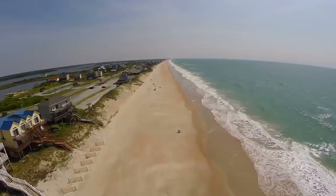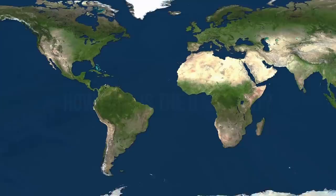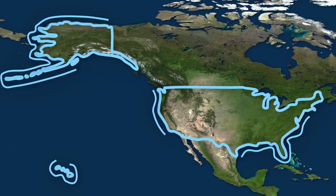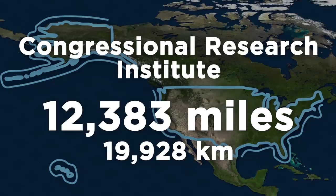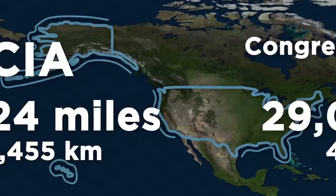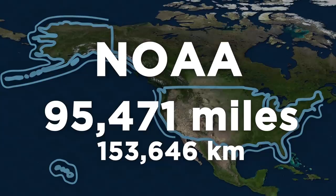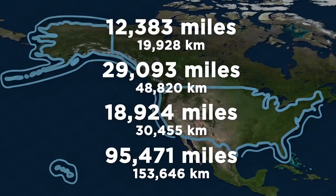So here's the problem this video is going to be talking about: how long is the coast of the United States? If you look at any map and see America, you might think it's easy — just measure the outline of the country and you have your answer. Several people and organizations have already tried this, like the Congressional Research Institute that calculated it to be 12,383 miles, a second study from them that changed it to 29,093 miles, the CIA puts it at 19,924 miles, and a study from NOAA calculated the shoreline to be 95,471 miles. You may have noticed that all of these numbers are different, which is weird because they're all just measuring the same coastline. So what's going on?